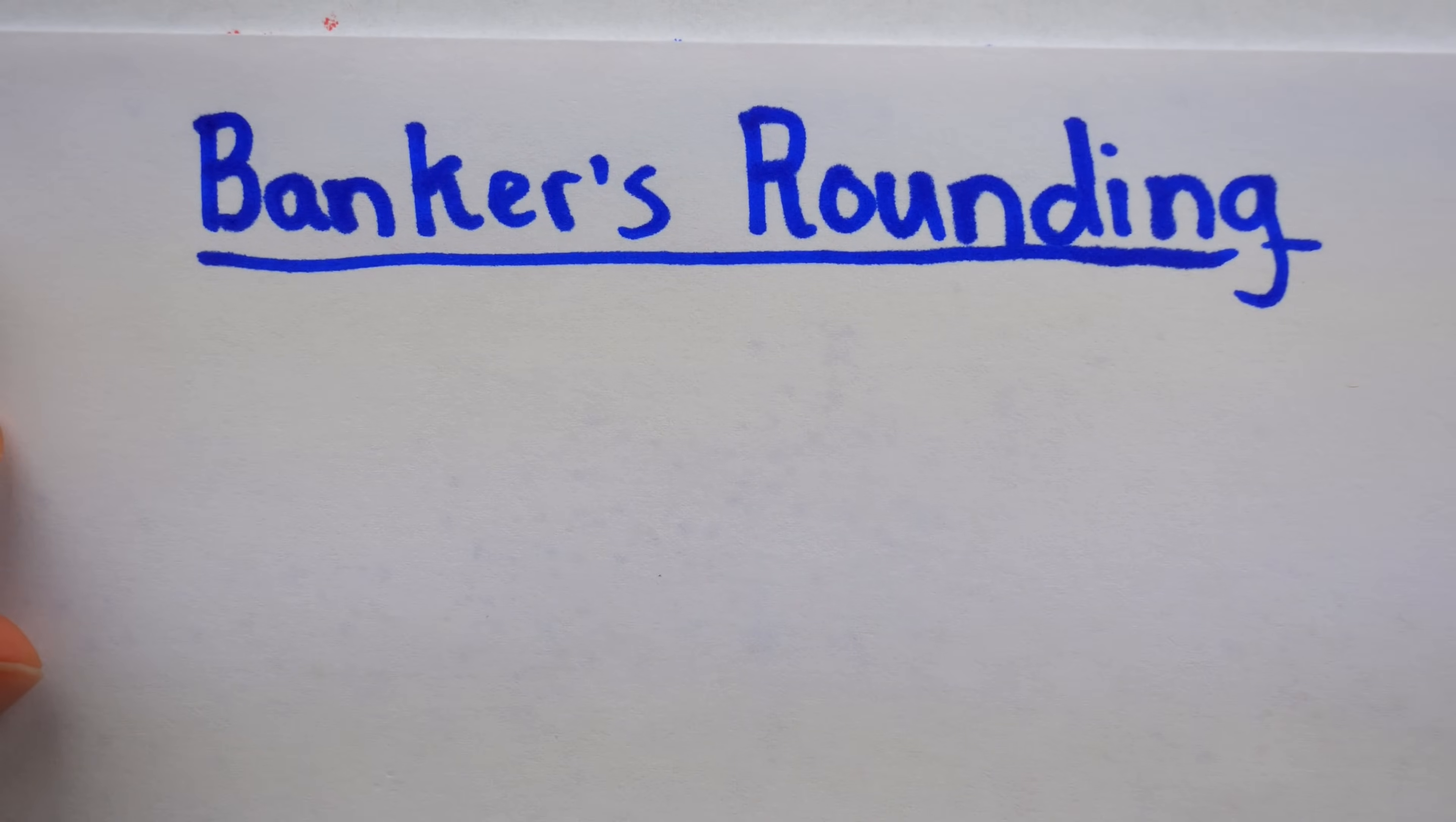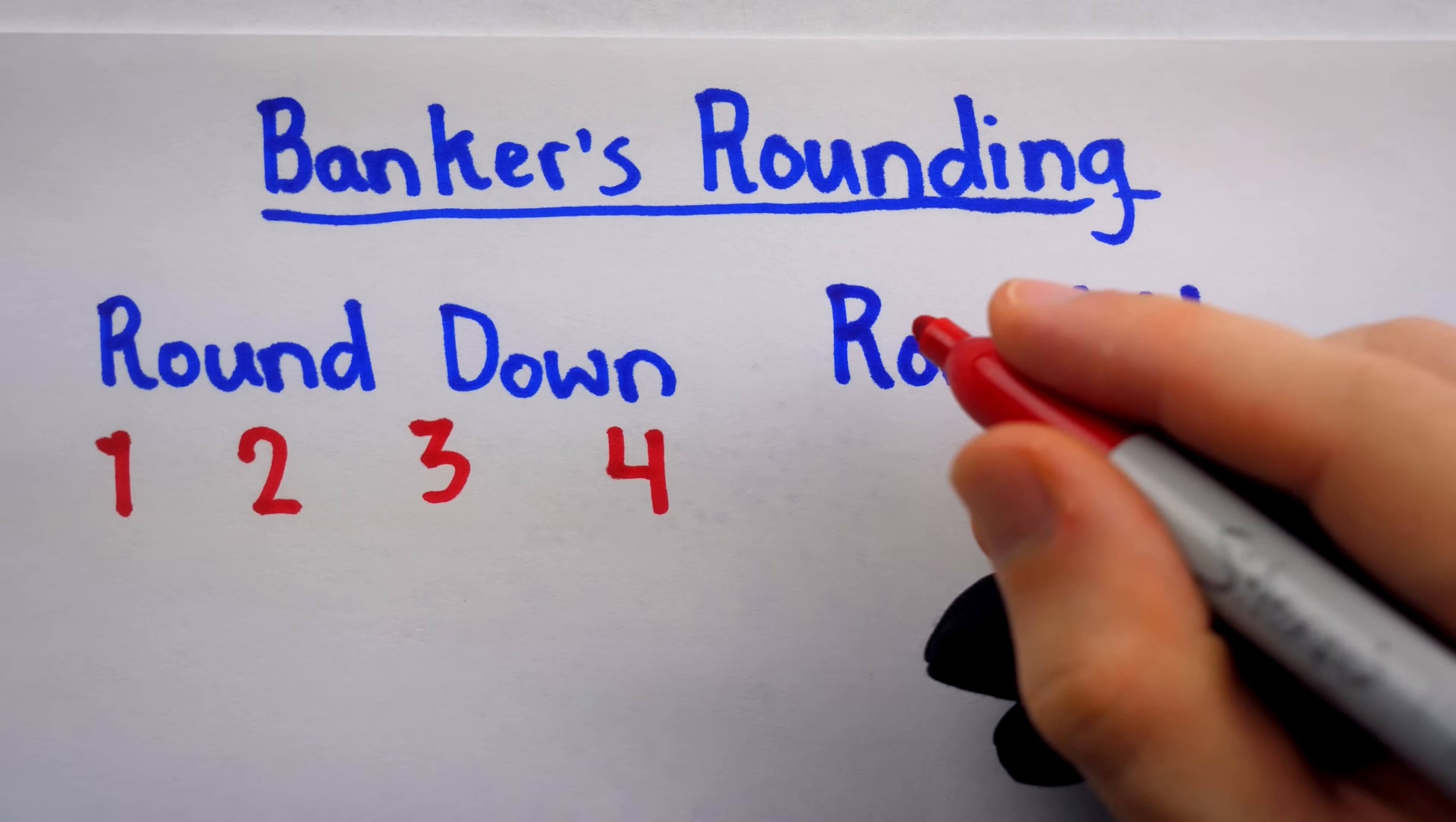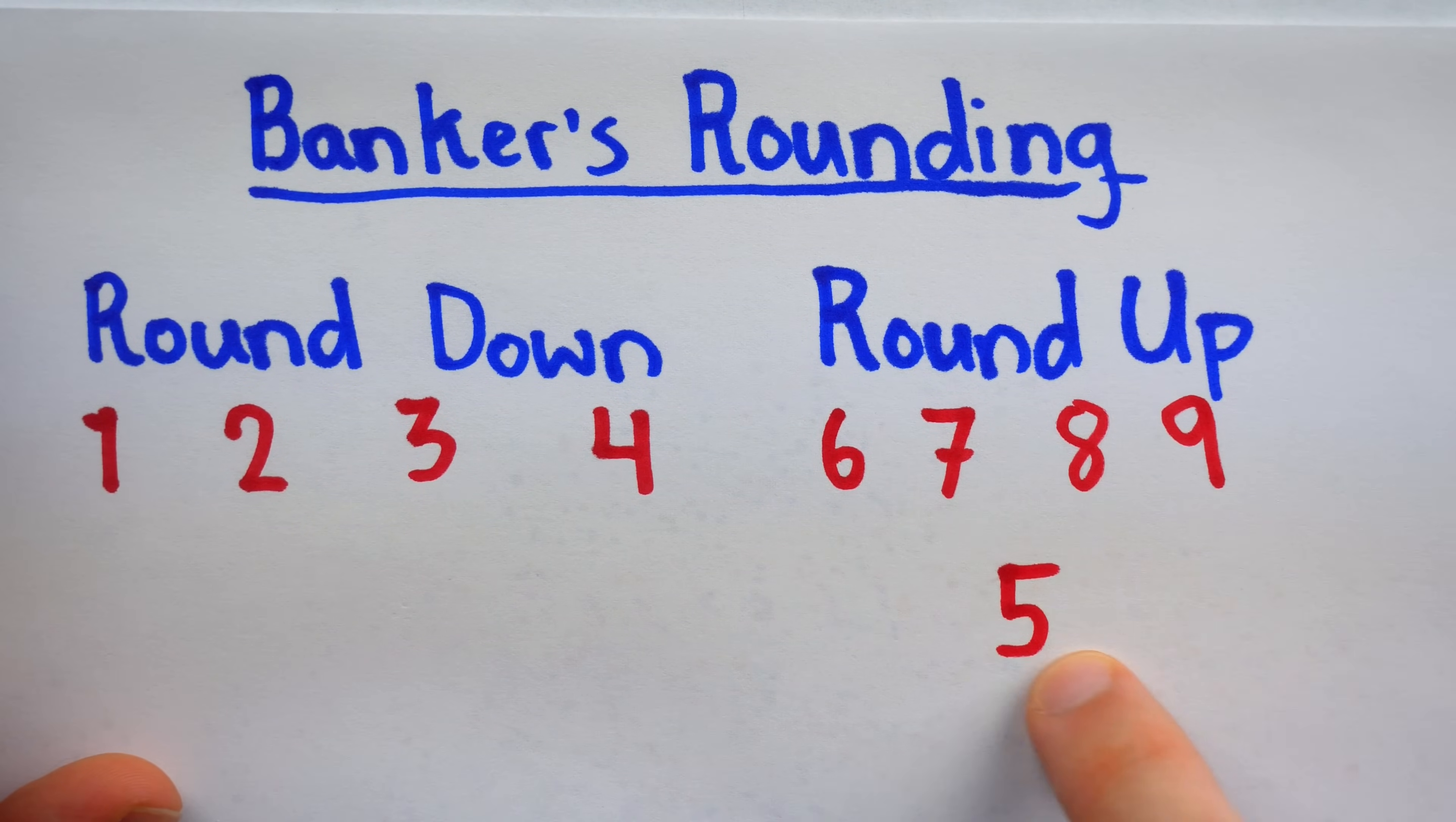The idea here is that if we imagine we're only rounding the last significant digit of our numbers, the original convention of rounding 0.5 up has an imbalance. Because we know the digits that are rounded down are 1, 2, 3, and 4. Like 0.1 would round to 0, 0.4 would round down to 0, and so on. What digits round up? We know that's 6, 7, 8, and 9. And, of course, 5. And 5 breaks the perfect balance. We have 4 digits, which would be rounded down. Note that 0 isn't showing up here because if 0 is the last significant digit, then we're not actually doing any rounding. So 4 digits get rounded down, but in our normal convention, 5 digits get rounded up.